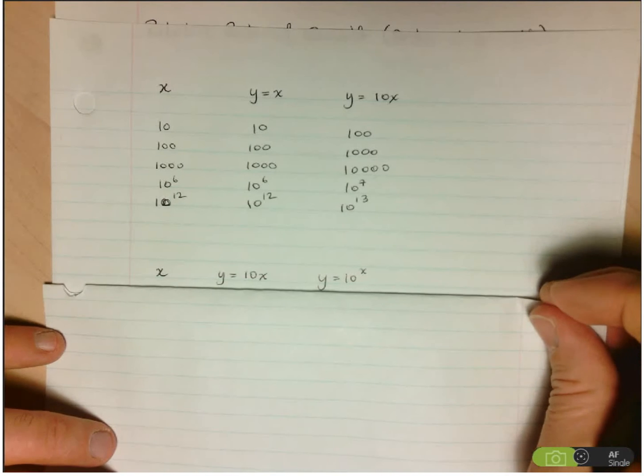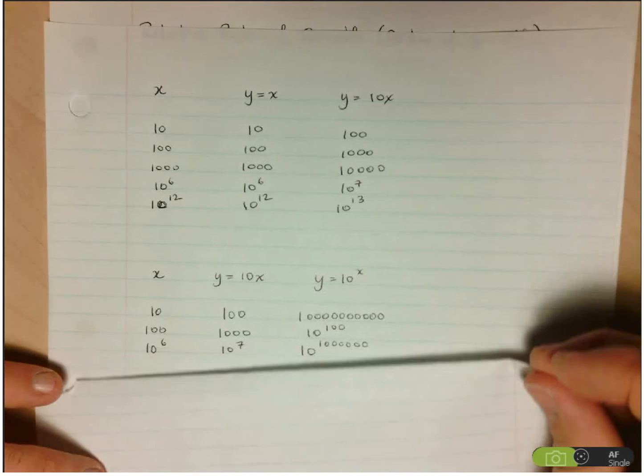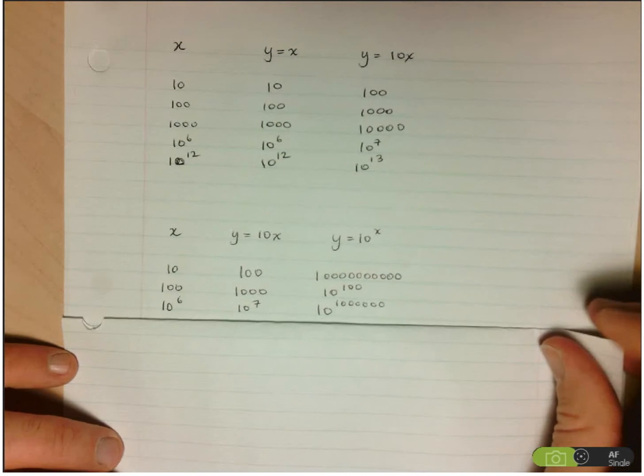And if we take a look at y equals 10x and y equals 10 to the x and we look at a table of values here, we see that that's just what occurs.